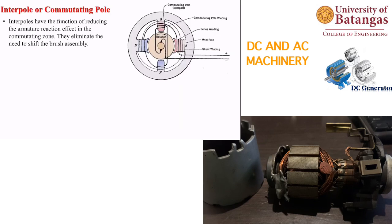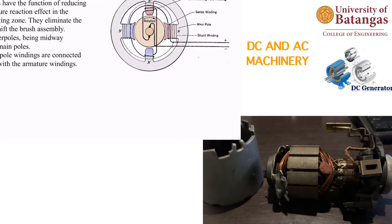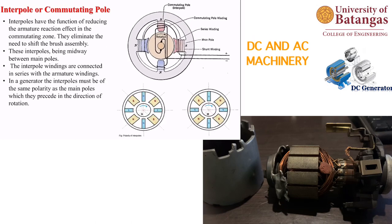The interpole (or commutating pole) is positioned between the main field poles to reduce armature reaction in the commutating zone. They eliminate the need to shift the brush assembly. The brushes rest on the commutator — they are not welded but simply rest on it, held by a spring-loaded sliding mechanism.